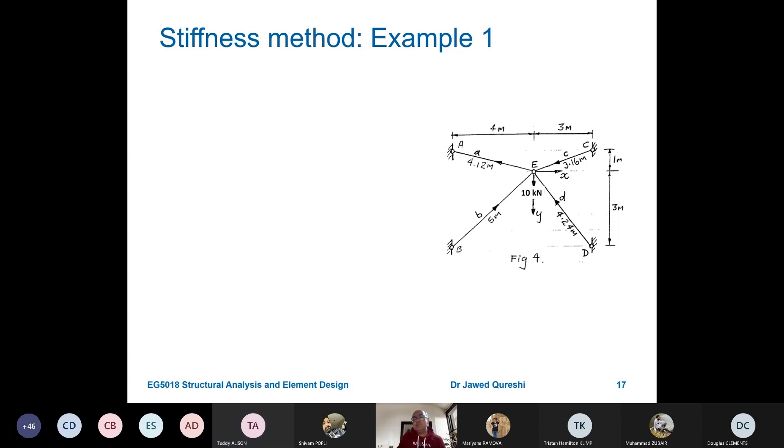Use Pythagoras theorem to work out the length of the members because you are given the horizontal dimensions. You are given vertical dimensions. From that, you can work out this 4.125, 4.24 and 3.16. You have to do three things. One is give arrows. Second is give member names and third is determine these lengths through Pythagoras theorem.